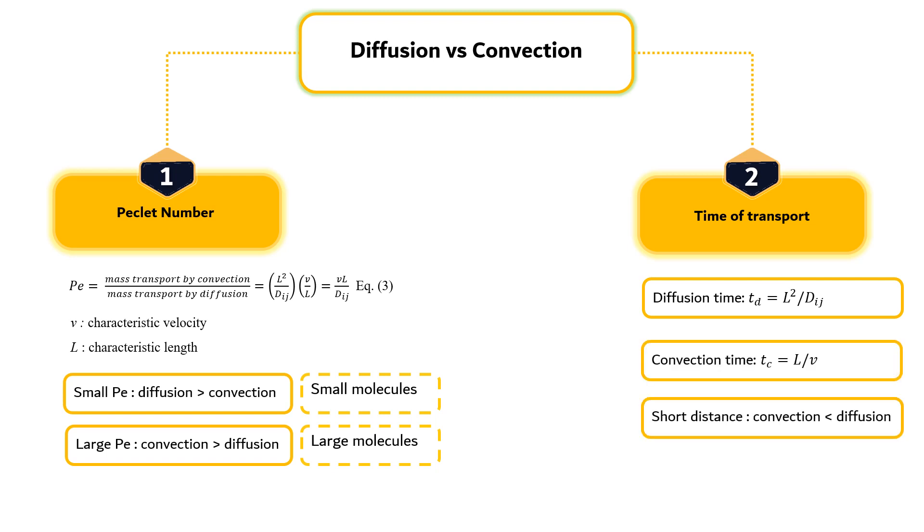For short distances, convection is slower than diffusion, whereas for longer distances, diffusion is slower than convection.